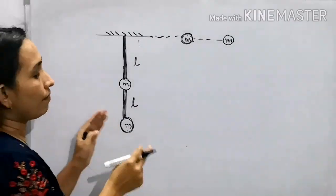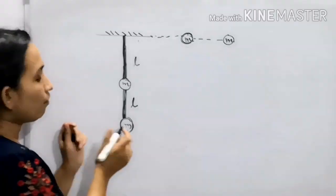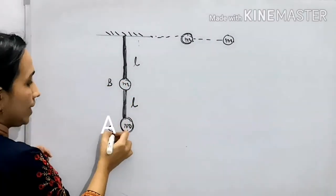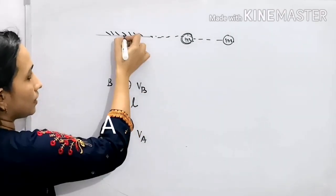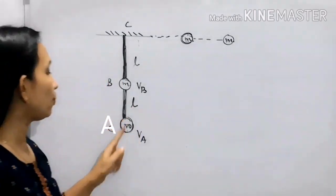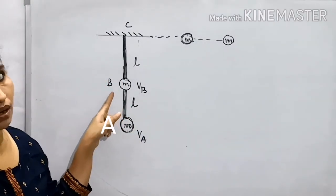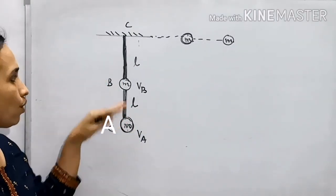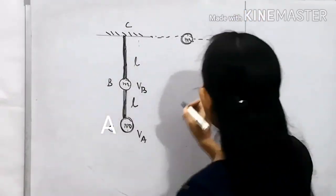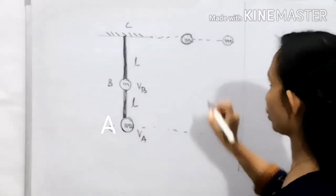To find velocity, I am taking this as B, this as C. This is velocity of A, this is velocity of B, and this is point C. Now applying total energy conservation because you require velocity of B. I am taking total energy with respect to the lowermost position.